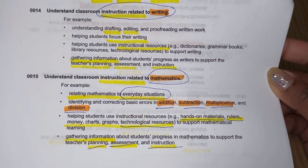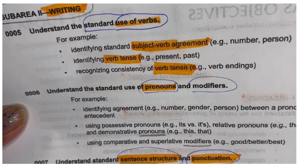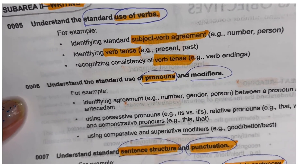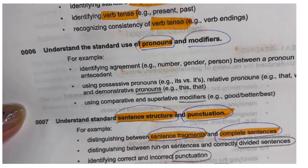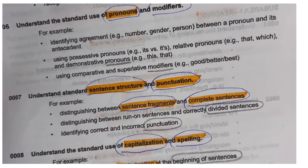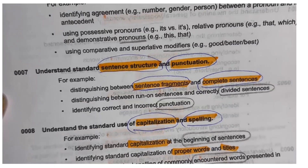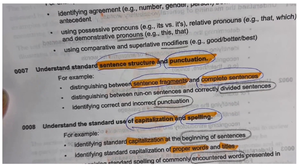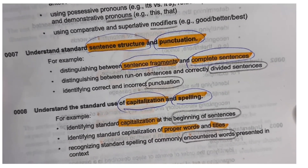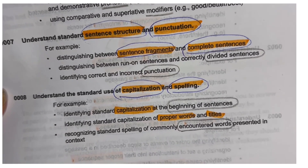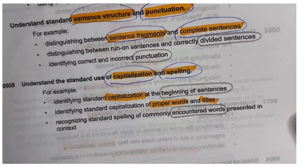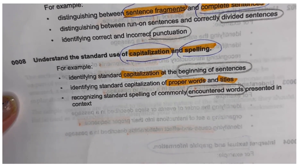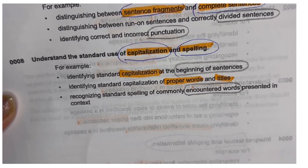In Writing Standards, you need to understand the standard use of verbs and subject-verb agreement, verb tense, pronouns and modifiers, types of pronouns, and using comparative and superlative modifiers. You also need to know sentence structure and punctuation — including sentence fragments, complete sentences, divided sentences, punctuation, capitalization, and spelling.